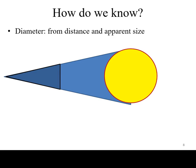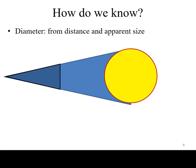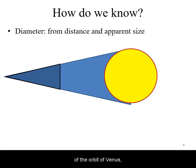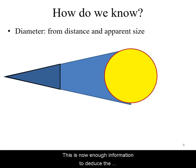We know how big the Sun appears to be in our sky, so we only need to know its distance to deduce its actual size. To this end, we use radio signals bouncing back from Venus to establish the scale of our solar system. Then we use relative sizes of the orbit of Venus versus the size of the Sun to deduce the distance of the Sun. This is enough information to deduce the size of the Sun.